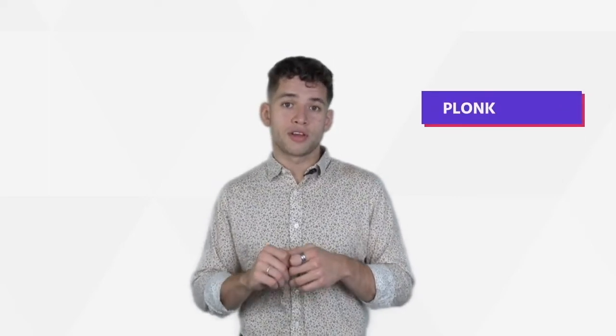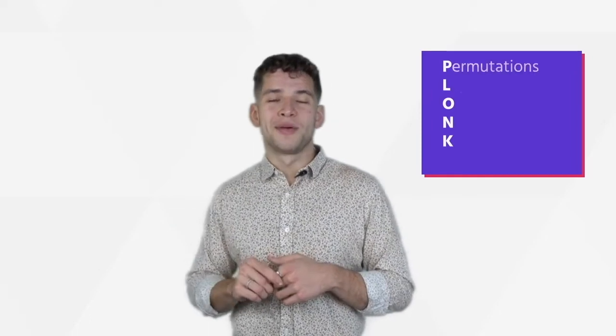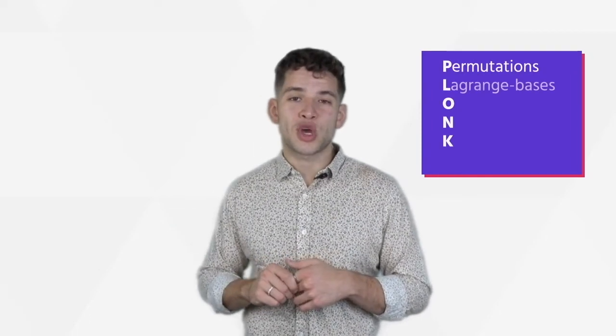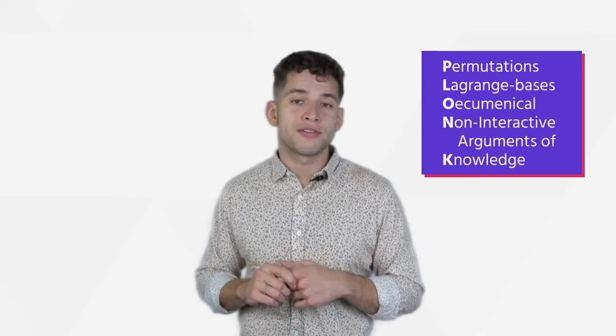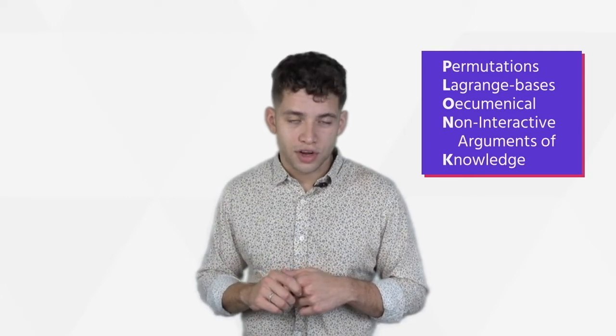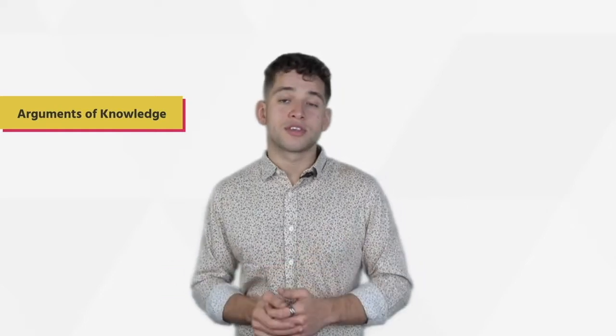The particular zero-knowledge proving system we use at Dusk is called PLONK — another fun acronym. PLONK stands for Permutations Over Lagrange Bases for Ecumenical Non-Interactive Arguments of Knowledge. The arguments of knowledge are these mathematical statements to say that you know something.